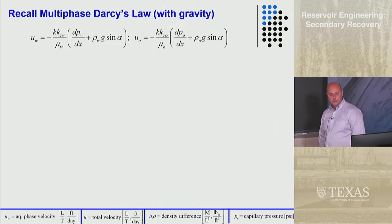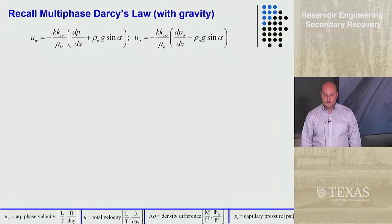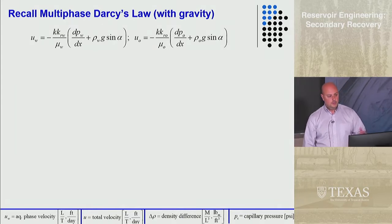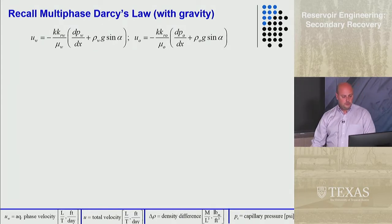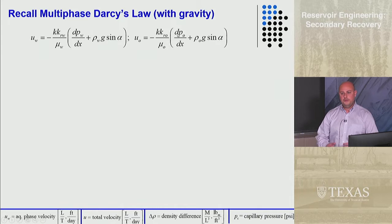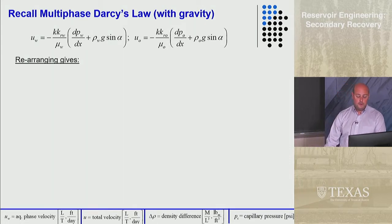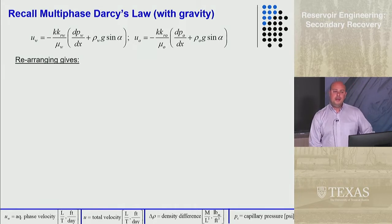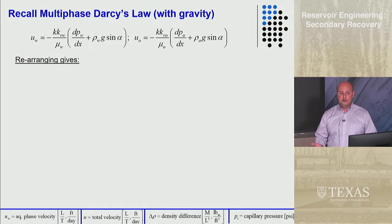Going back to multiphase flow with gravity, we have terms for water and oil. We have gravity: the density of water times g times the sine of the angle. Also, p_w is not necessarily equal to p_o — the pressures of the two phases can differ, and the difference is the capillary pressure. Many times in this class I will tell you to neglect capillary pressure, in which case p_w equals p_o equals p.